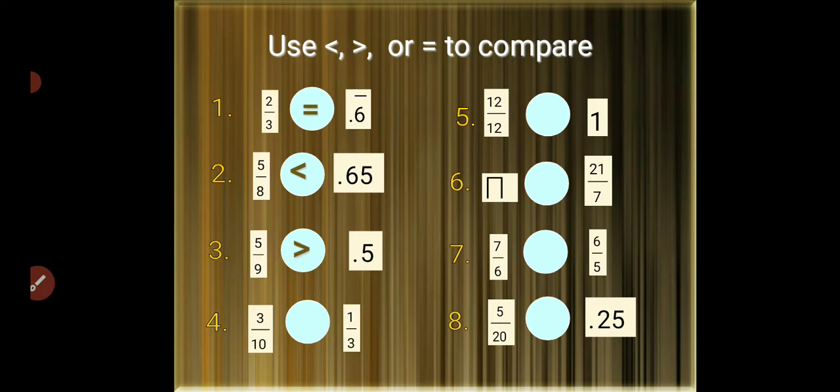Number 3: 5/9 is greater than 0.5, and 1/3 is greater than 3/10. Number 4: 12/12 and 1 are equal. Number 5: 7/6 and 6/5, so 6/5 is greater than 7/6. Number 6: 5/20 and 0.25 are equal.